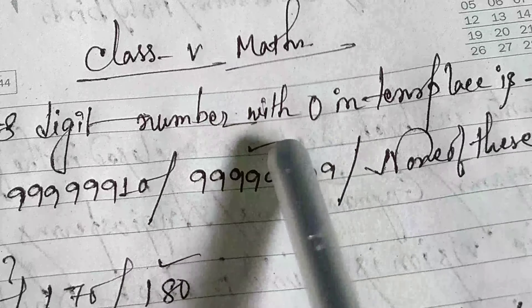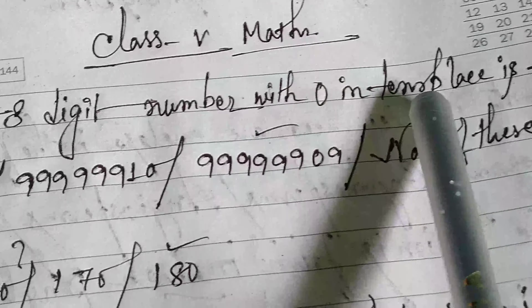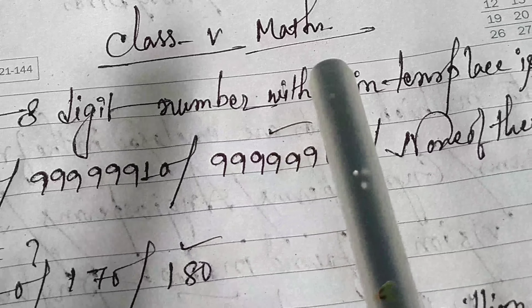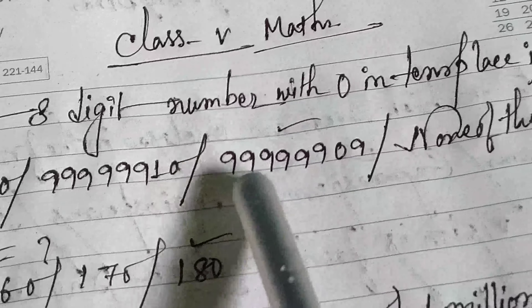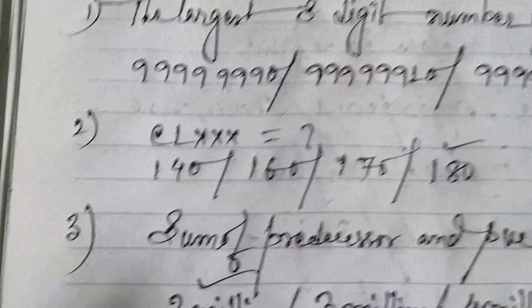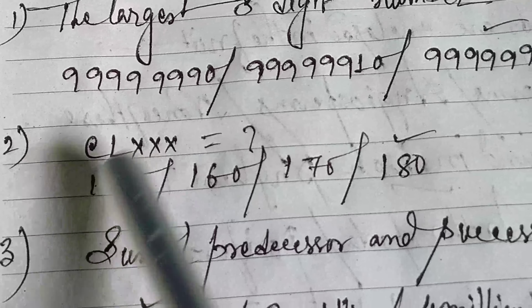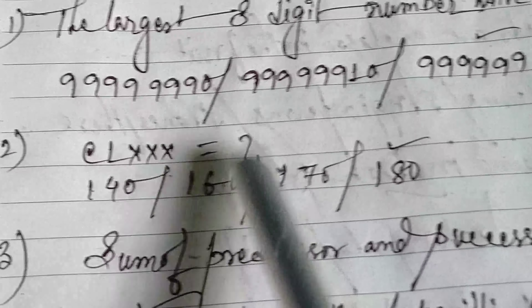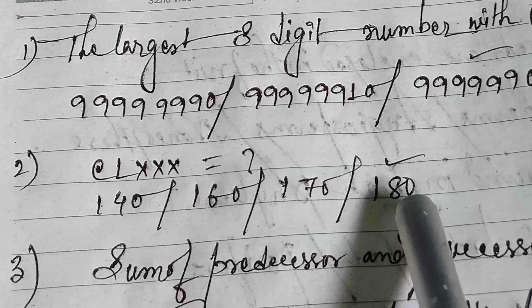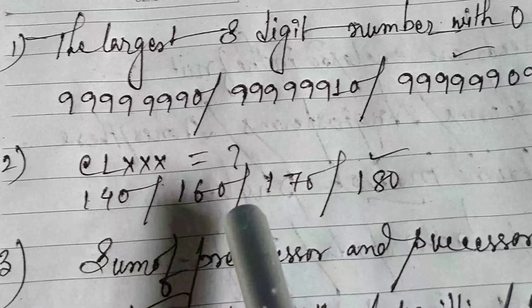The largest 8-digit number with 0 in the 10th place. Look at the options. The answer is 99999909. We count from the 1st place: 1st, then 10th. We have to find the largest number which has 0 in the 10th place — jis ka 10th place mein 0 hoga. That's why the answer is 99999909.